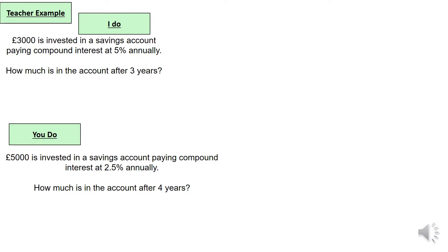Now there is a formula that you can learn for this which goes by: amount times the multiplier to the power of number of years.